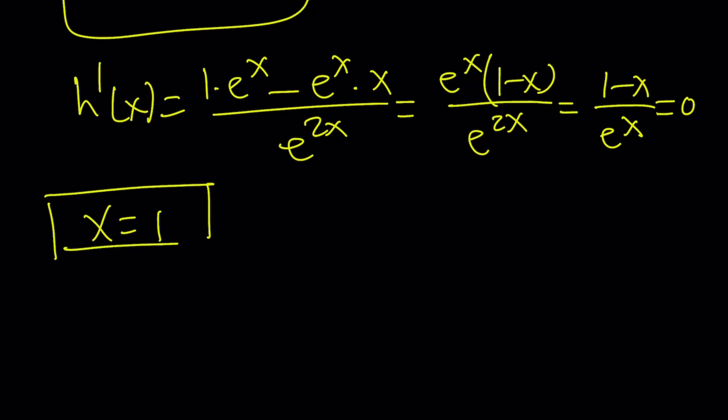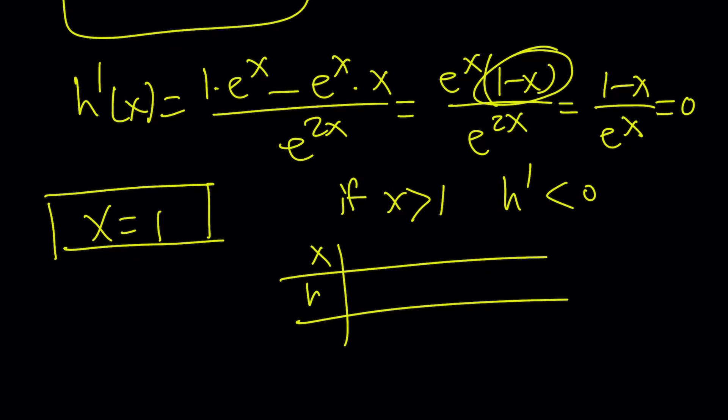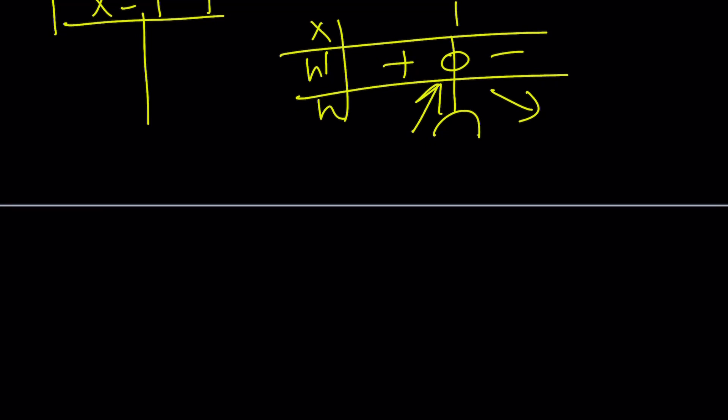So at x equals 1, we have a minimum or a maximum in this case. And by the way, you can tell if x is greater than 1, you're going to have a negative derivative. If x is greater than 1, this is going to be negative. So h prime is going to be less than 0. So if you make a quick table, this is h prime, this is h at 1, it's 0. And for greater values, it's going to be negative and otherwise positive. It's going to have an increase and then decrease, which means we're going to have a maximum at x equals 1.